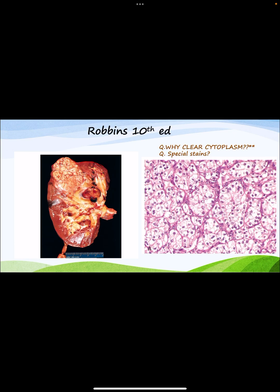A gross image shows the kidney with a well-circumscribed tumor in the upper pole distorting the normal contour, yellow on cut surface. Microscopically, cells are arranged in nests separated by thin fibrous septa containing blood vessels, with centrally placed nuclei. Special stains: PAS for glycogen and Oil Red O for lipids — important for MCQs and viva.